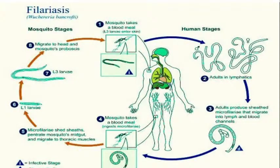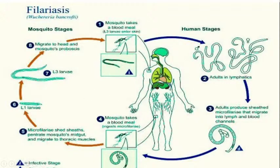One very important nematode parasite is the filarial worm, which causes a disease called filariasis. The filarial worm is Wuchereria bancrofti. Mosquitoes take blood and larvae enter the human body when the mosquito's proboscis pierces the skin. Mosquitoes acquire the filarial larvae by ingesting stagnant water containing them; the larvae then penetrate the mosquito's midgut and develop.